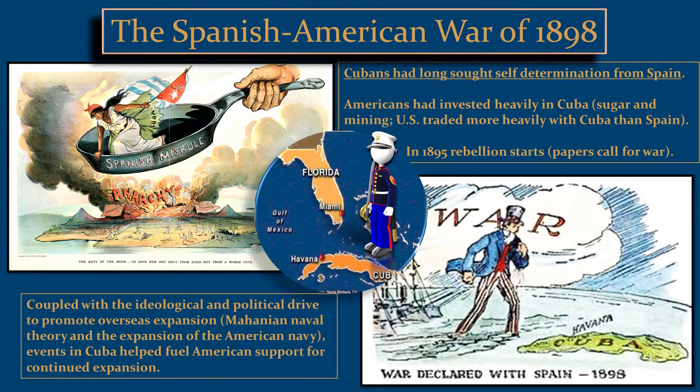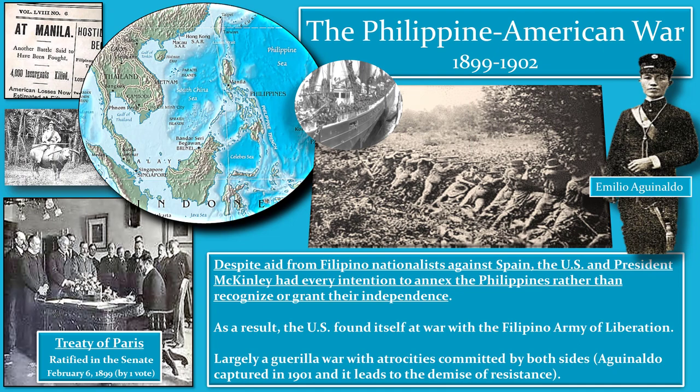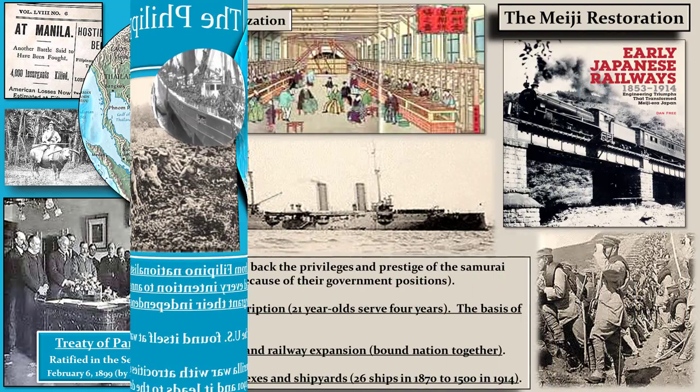To the victor go the spoils. The United States was very successful in their campaigns in the Pacific, as well as the Caribbean. As a result of victory, they picked up some pretty good possessions and spheres of influence and control. Not only did the United States establish a sphere of influence over Cuba and the Caribbean, but they outright annexed the Philippines after waging the successful Filipino-American War. Filipinos, led by Aguinaldo, had thought they were fighting for their own independence — they didn't quite know the United States had other designs.